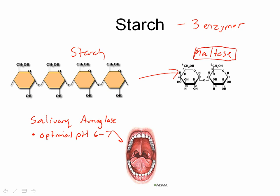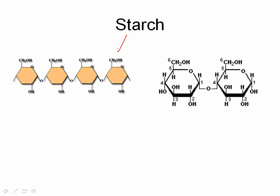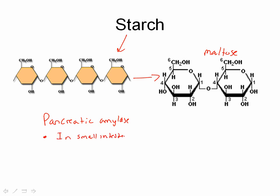After this happens we have maltose, and that maltose is going to be broken down further. But in the mouth, not all of the starch is going to be broken down — some is going to continue on into our stomach and into our small intestine. If it gets into our small intestine without being broken down, it will be broken down into maltose again, but this time by a different enzyme called pancreatic amylase. Same process, breaks it down from starch into maltose, but it does it in the small intestine. It's made by, as the name suggests, the pancreas. Optimal pH in the small intestine is between 7 and 8.